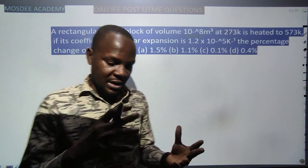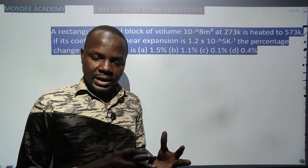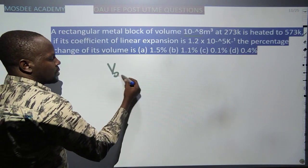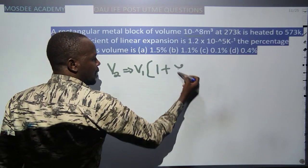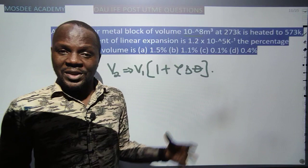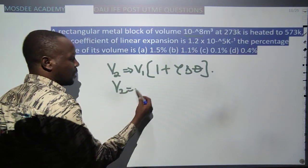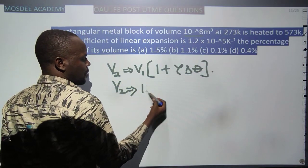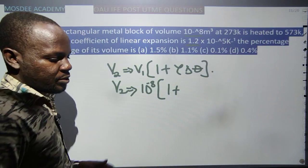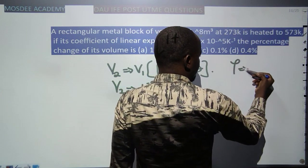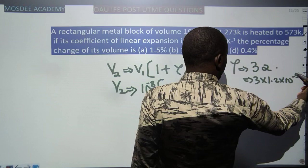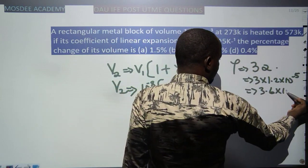There are three types of expansion: linear, superficial (area), and cubic (volumetric). The relationship between linear expansion α and cubic expansion γ is γ = 3α. Given α = 1.2 × 10⁻⁵ per Kelvin, we have γ = 3 × 1.2 × 10⁻⁵ = 3.6 × 10⁻⁵ per Kelvin. The temperature change ΔT = 573 − 273 = 300 K.